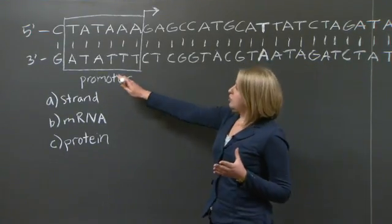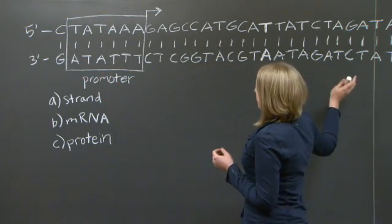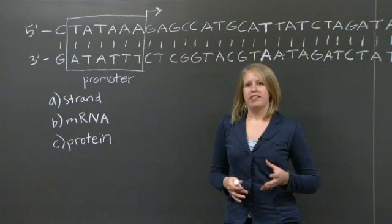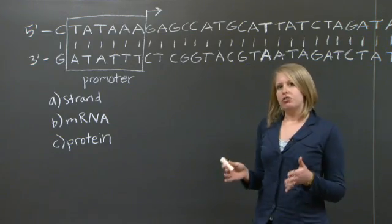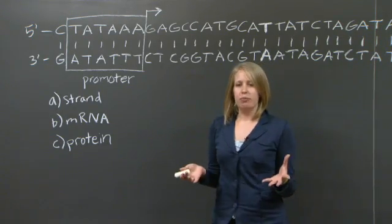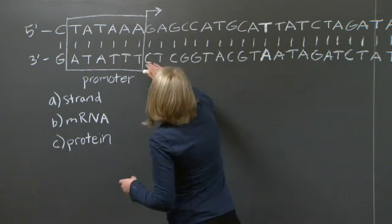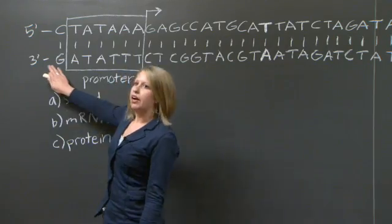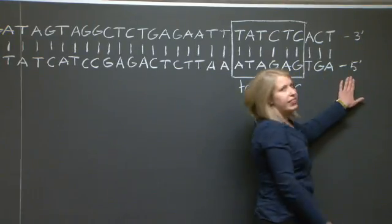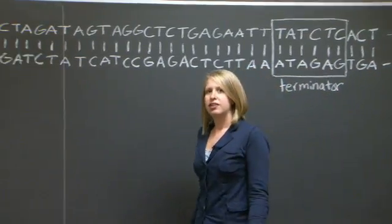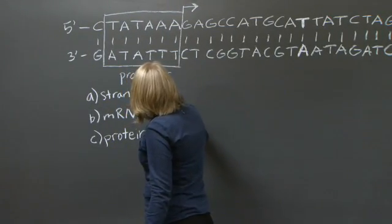All transcription will proceed reading a template in the 3 prime to 5 prime direction, and we'll polymerize the RNA made in the 5 prime to 3 prime direction. So what we need to do now is figure out what strand is going in the 3 prime to 5 prime direction in the direction that we're going to be transcribing. So that means that this strand, which is going from 3 prime over here, down to 5 prime at the end, this is going to be our template strand. So our template strand is going to be the bottom.